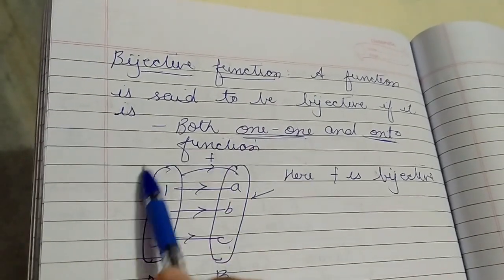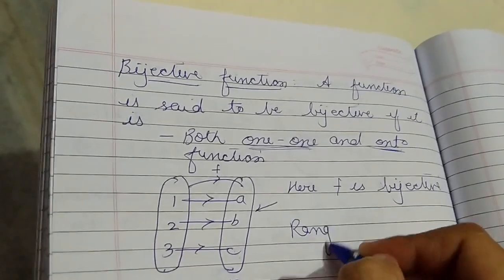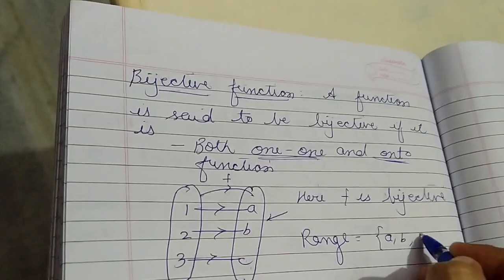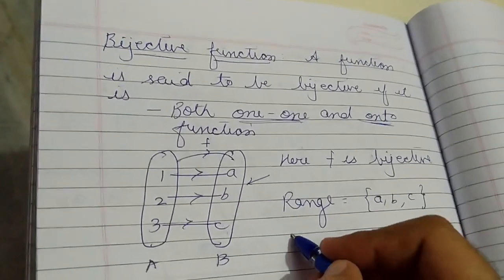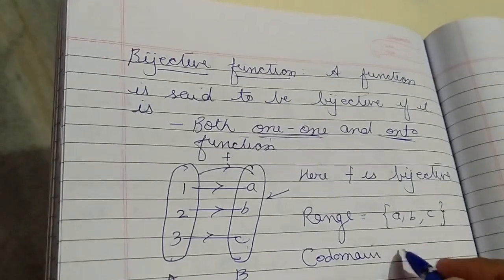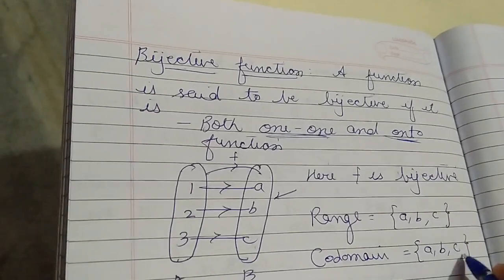Therefore, the given function is one-one. And here the range equals {a, b, c}, and the codomain is also equals to {a, b, c}.